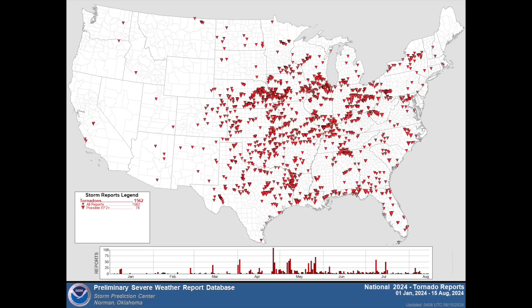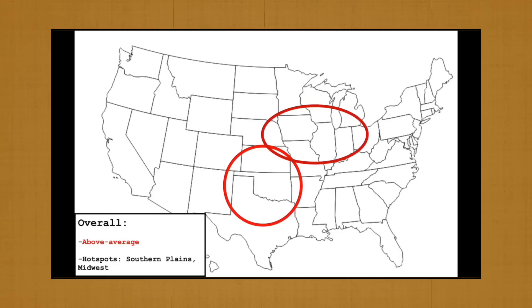Now let's see how our 2024 tornado season forecast performed. Our forecast was for tornado frequency and distribution across the US for the March through June time period. Taking into account the expectation for generally favorable conditions among our modulating factors and several analog years, we predicted an above average tornado season in the US with two main potential hot spots: the southern plains encompassing Kansas, Oklahoma, and Texas, as well as the region from the central plains into the Midwest.